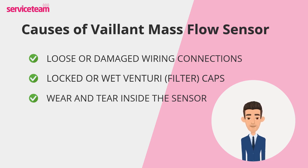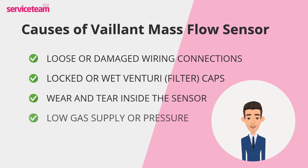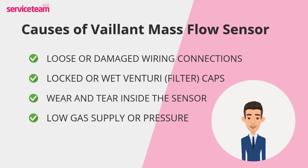The mass flow sensor monitors the fuel-to-air ratio for safe combustion. If the gas pressure is too low or inconsistent, the sensor detects abnormal flow, and the boiler may refuse to ignite or repeatedly shut down to prevent unsafe conditions.